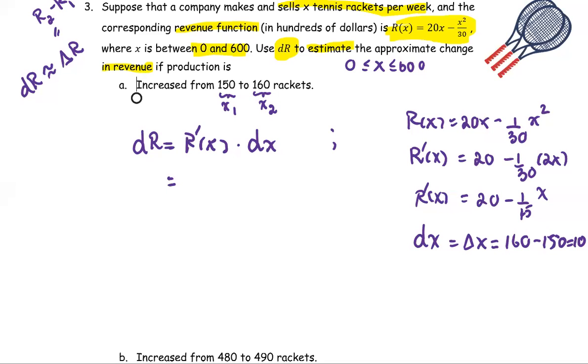So from the information we have, we're going to replace it by the differential R, the R prime, which is the quantity 20 minus 1/15 times x and multiply by the dx, which is the value 10. Evaluate at x, always evaluate at the first point of the x, and then replace x with 150.